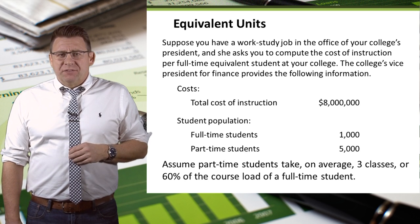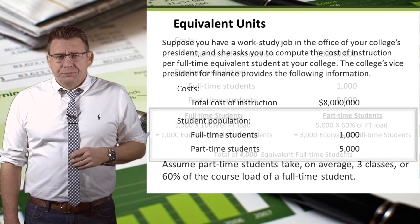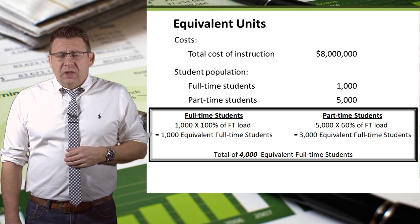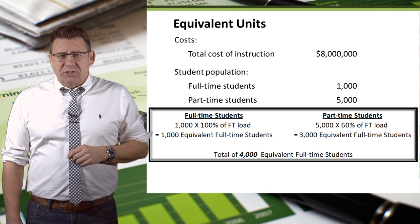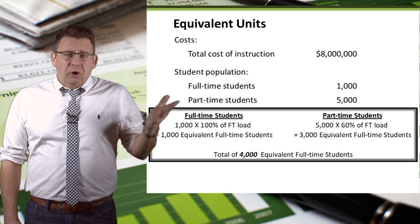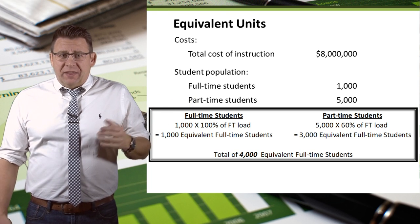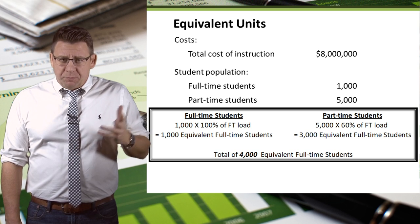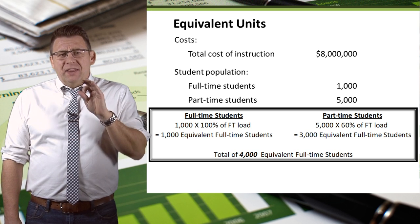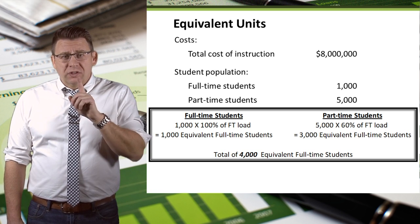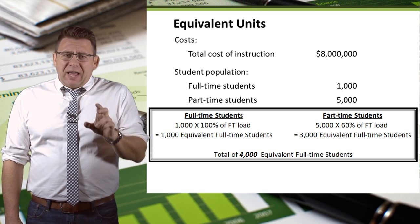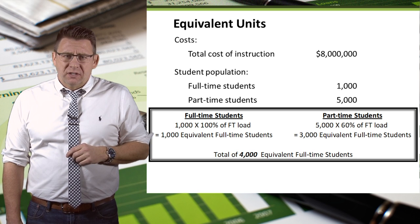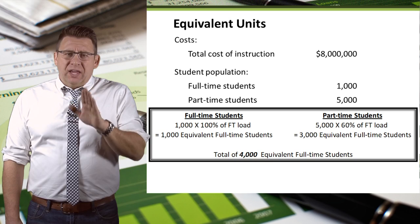Now we can figure out the average cost of instruction per full-time equivalent student. 1,000 full-time students take 100% of a full load, so 1,000 times 100% equals 1,000 students. Then we multiply 5,000 part-time students times 60%, which equals 3,000 students. So 5,000 part-time students is the equivalent of 3,000 full-time students. Thus, the total full-time equivalent students is 4,000.